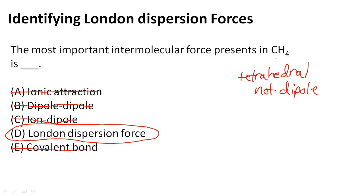When polarization does occur, it depends on the molar mass of that molecule. If the molar mass is greater, that means the molecule usually has more electrons, and based on the number of electrons, the force gets stronger and stronger. The London dispersion force is the only option here because CH₄ is not a dipole, and even though it is an intermolecular force, dispersion forces are weak.